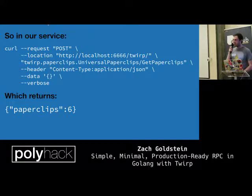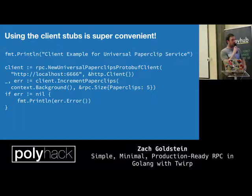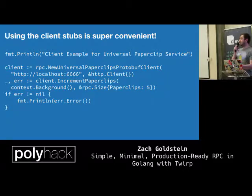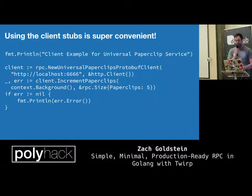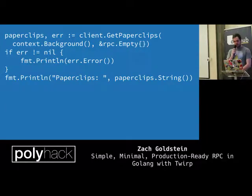What does it look like to interact with this from client code? Typically you'd have to think about HTTP and how to execute the request. But since we have these stubs, we just create our client — NewUniversalPaperclips — point it at where the server is running, and call methods on it like client.IncrementPaperclips without worrying about creating an HTTP object. We either get an error or get data back. It strips out a whole class of errors that could happen in your code.